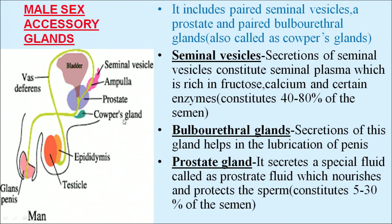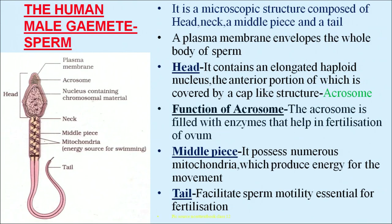The human male gamete, the sperm, is a microscopic structure composed of a head, neck, middle piece, and a tail. A plasma membrane envelops the whole body of the sperm. The head contains an elongated haploid nucleus, the anterior portion of which is covered by a cap-like structure called the acrosome, which helps the sperm enter the ovum and is filled with enzymes that help in fertilization. The middle piece possesses numerous mitochondria which produce energy for movement.